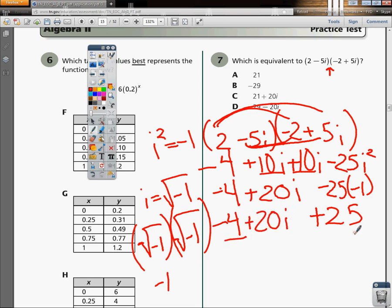Bring my real number terms together, 25 minus 4 is 21, plus 20i. So based on that, my answer should be C.